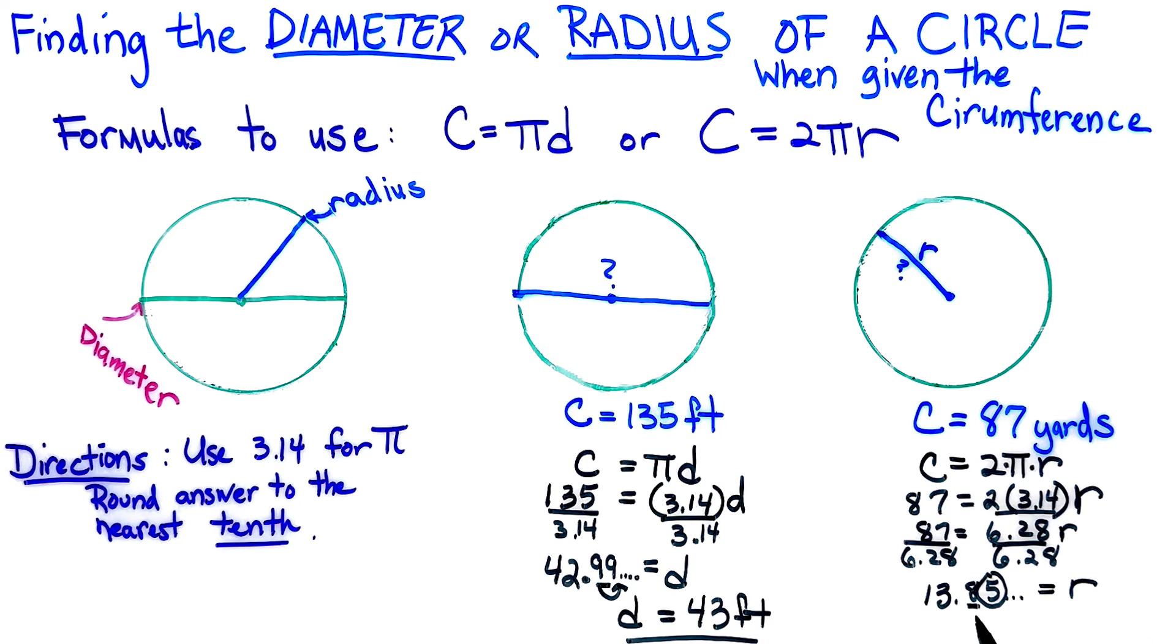They wanted it rounded to the nearest tenth. So when I'm looking at this, rounding to the nearest tenth, my radius is going to be 13.9. And this time, our units are in yards.